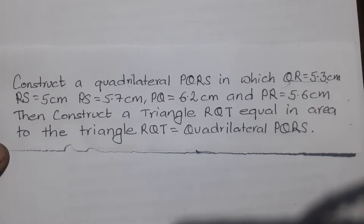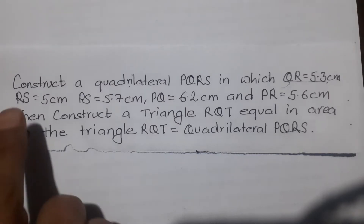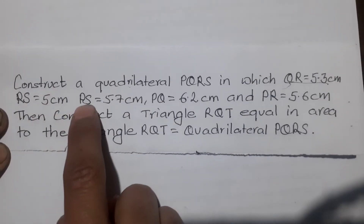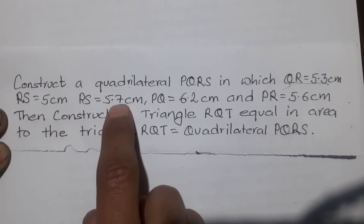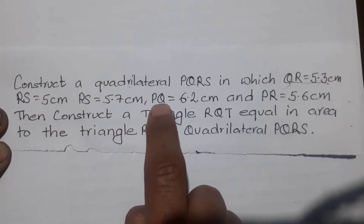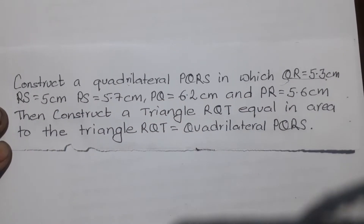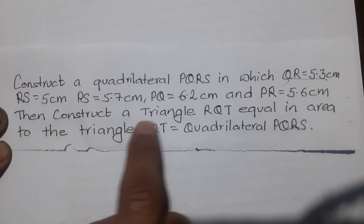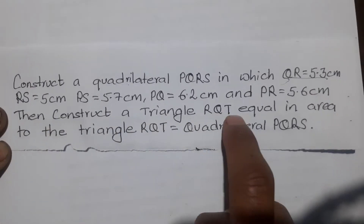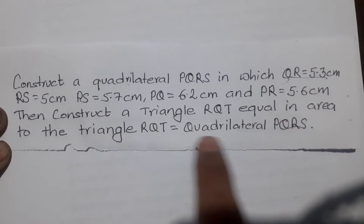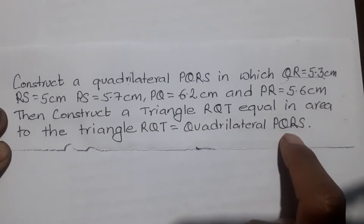Construct a quadrilateral PQRS in which QR equals 5.3 cm, RS equals 5 cm, PS equals 5.7 cm, PQ equals 6.2 cm, and PR equals 5.6 cm. Then construct a triangle RQT equal in area with the quadrilateral PQRS.